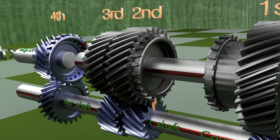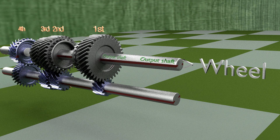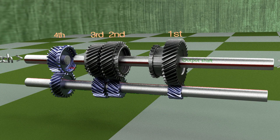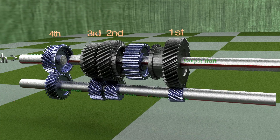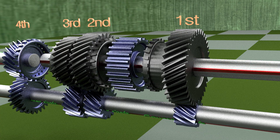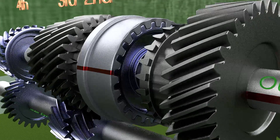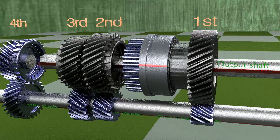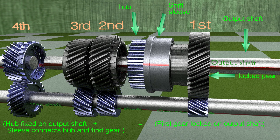All the gears on the output shaft rotate at different speeds according to their gear ratio. On the other hand, the output shaft is connected to the wheels, and hence all the gears on the output shaft rotate at a speed related to the wheels. For transmitting power to the output shaft, one of the freely rotating gears needs to be locked to the output shaft. To do so, a hub is fixed to the output shaft, so the hub rotates with the output shaft. A sleeve is splined to the hub and can slide axially on the hub. This sleeve can be slid and engaged with the synchro teeth on the side of the gear, locking the gear to the output shaft through the hub. Thus, the locked gear, the output shaft, the shift sleeve, and the hub act as one unit and rotate at the same speed.